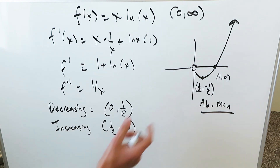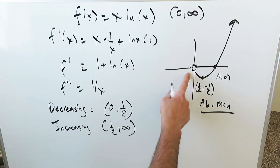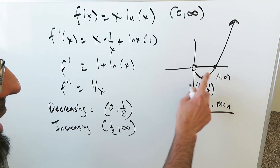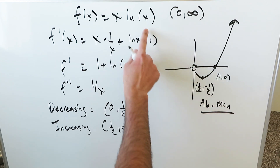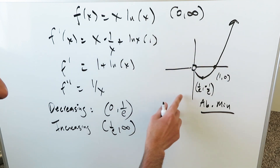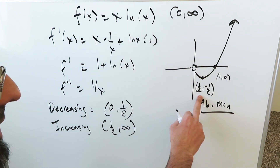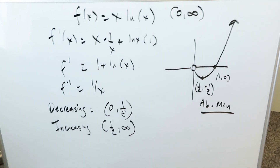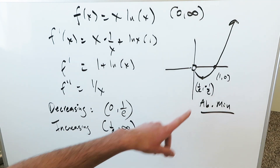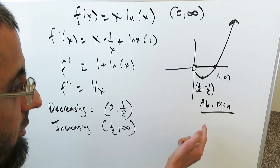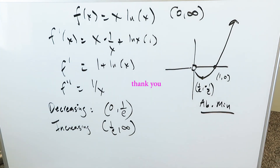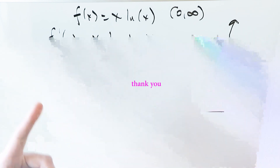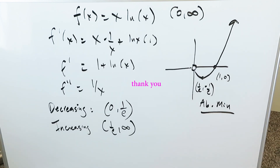That is our complete graph. It has a closed root at (1, 0), an open value at the origin, and a critical point at (1/e, −1/e) which is a local and relative minimum in the neighborhood of that value, and a global and absolute minimum over the entire domain. You can verify it on your software. Thank you for joining me. Have a good day.